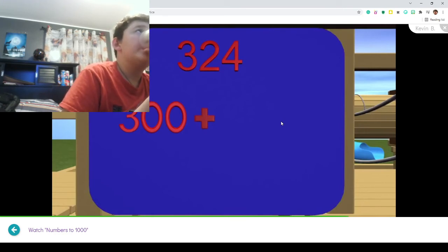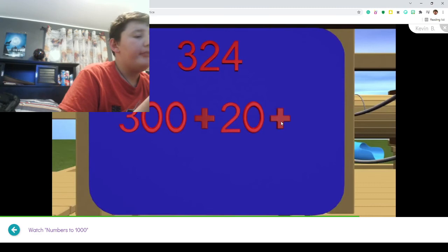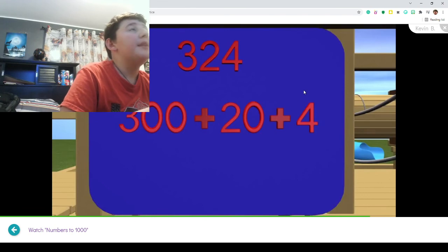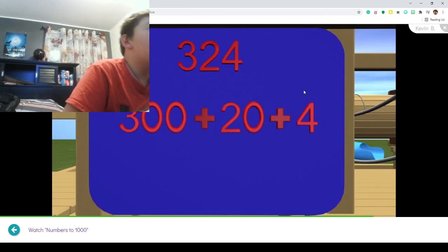Good job guys. So we write down the 20 and put down the addition sign. Last of all, we have the 4. What is the 4 worth in this number? Since the 4 is in the ones place, it is worth 4. So the number 324 written in expanded form is 300 plus 20 plus 4.